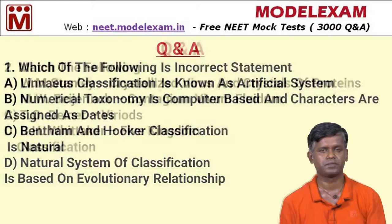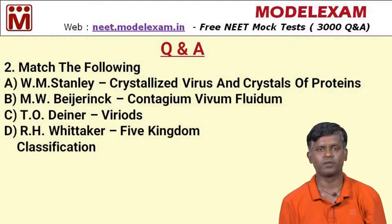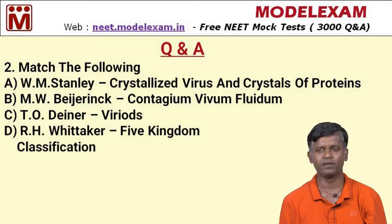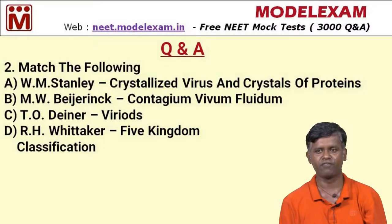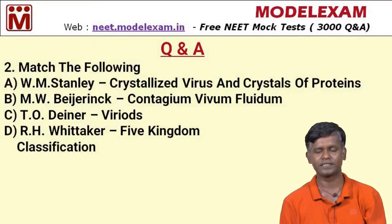Question number two: match the following. On the left is a list of scientists and on the right are their inventions and discoveries. First option: W.M. Stanley — he crystallized the virus and crystals of proteins. Second option: M.W. Beijerinck — corresponding to contagium vivum fluidum. Third option: T.O. Diener — corresponding to discovering viroids. Fourth option: R.H. Whittaker — corresponding to proposing the five kingdom classification. All options are correctly matched.